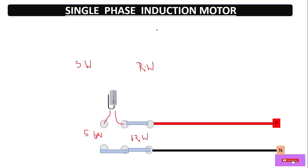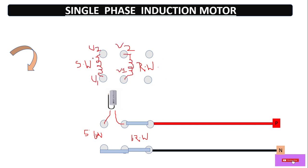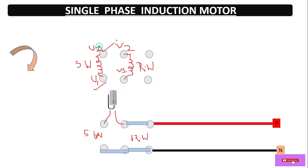Now let's come to the single-phase induction motor — basically how to change the direction of the single-phase induction motor. Here we have a six-terminal connector and it has two windings: one is the starting winding and one is the main winding, or we can say running winding. Here we have U1 and U2 for one winding, and V1 and V2 for the other — these are the terminals of the starting winding and running winding.